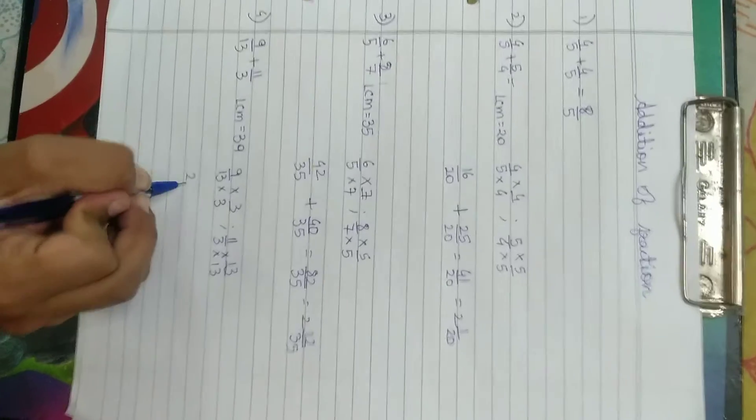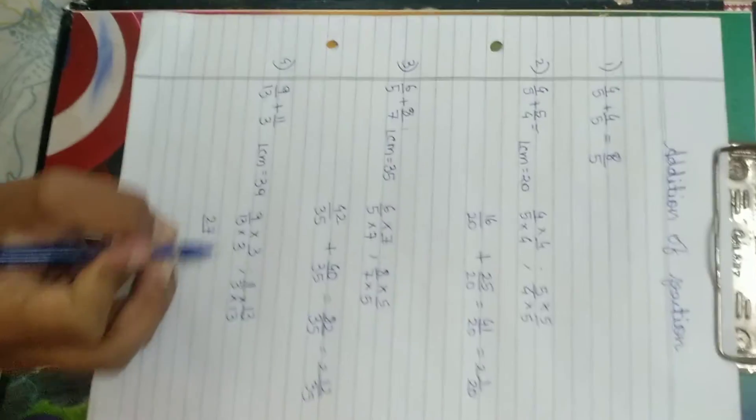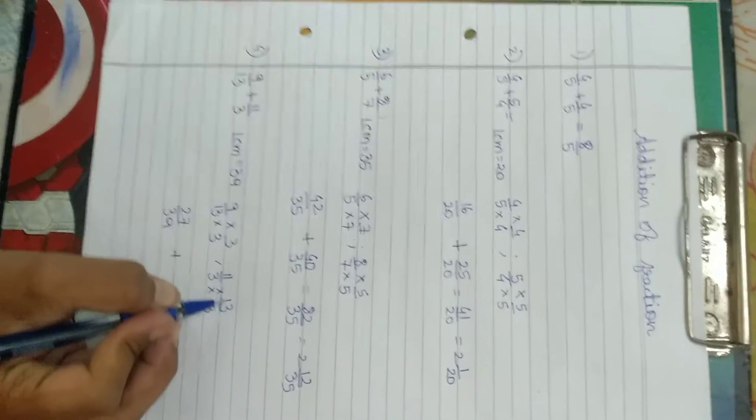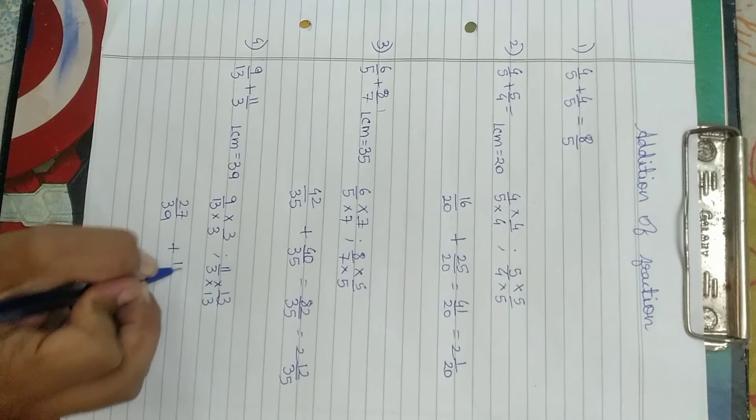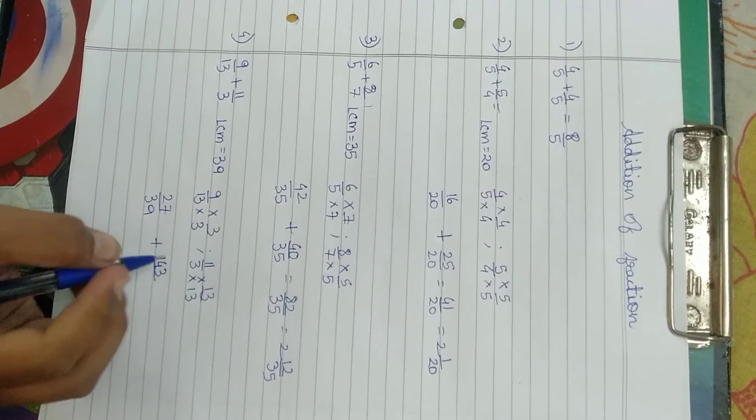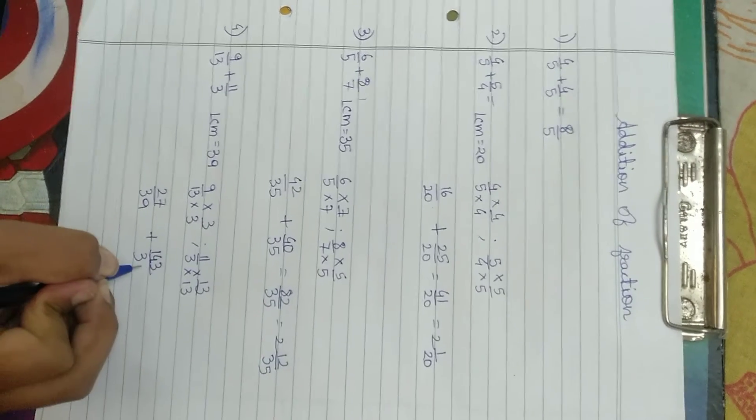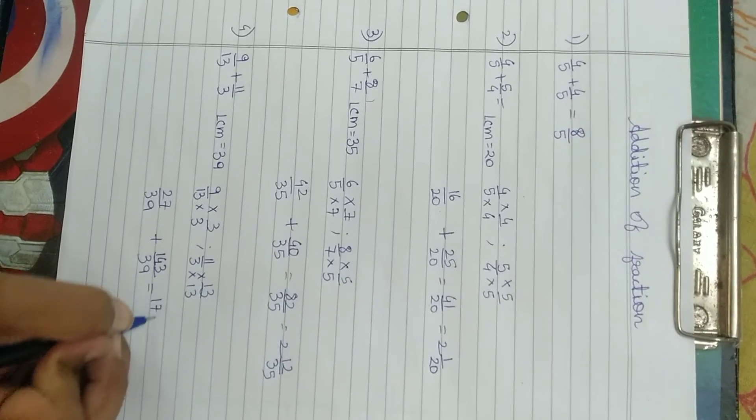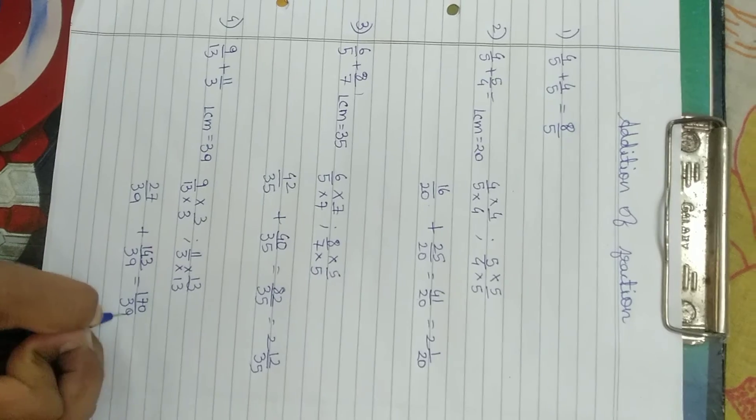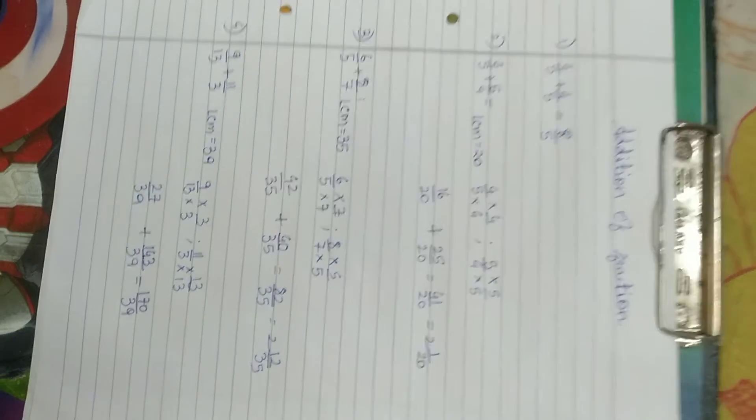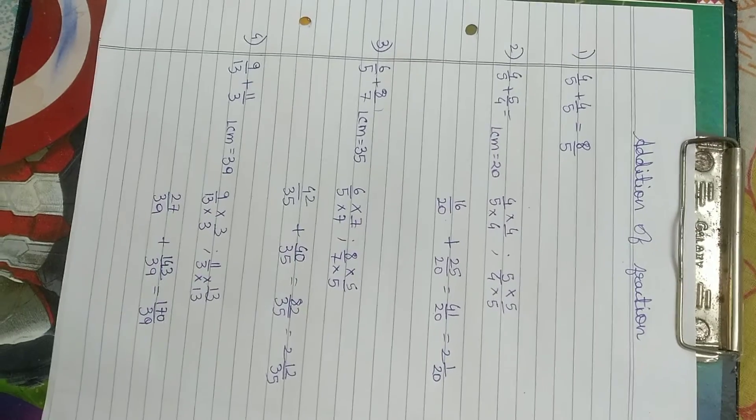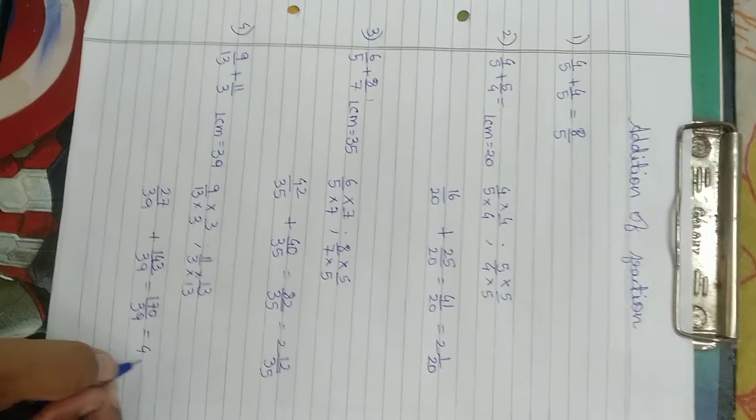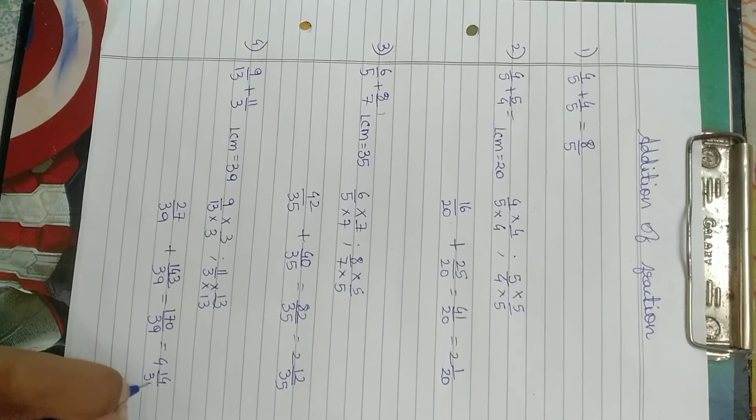Now 9 times 3, 27 by 39, plus 11 times 13 is 143 by 39. The answer would be 170 by 39.